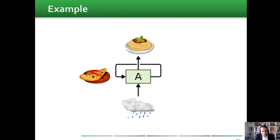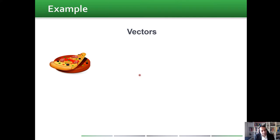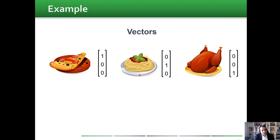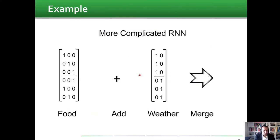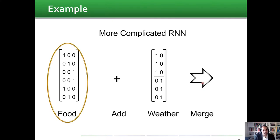To represent this mathematically, like the food vectors, we represent the weather by a vector as well. For sunny we have the vector [1, 0] and for rainy we have [0, 1]. Now that we have all these vectors, we make steps in the recurrent neural network: a step for analyzing the food, a step for analyzing the weather, then we add these two together and merge them to get today's food.